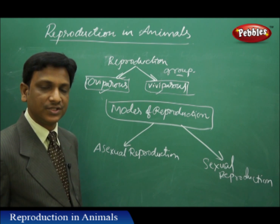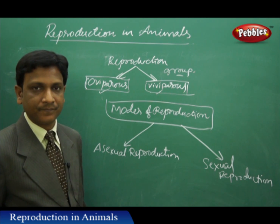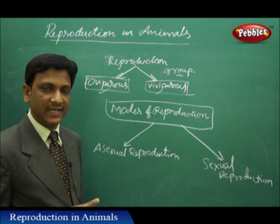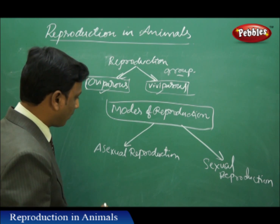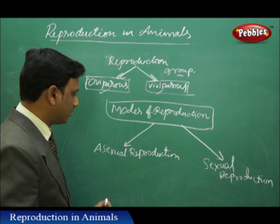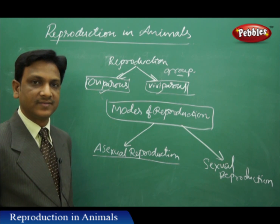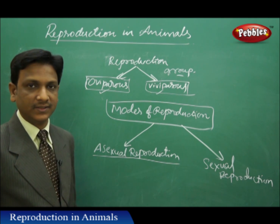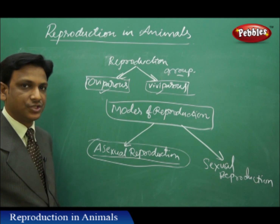We observed the same kinds of asexual and sexual reproduction in plants also. In seventh class when we studied reproduction in plants, we studied asexual reproduction and sexual reproduction. Sexual reproduction means fusion of male and female gametes takes place — one male cell and one female cell combine to produce a zygote. Whereas in asexual reproduction, organisms are produced without the fusion of male and female gametes. Now first let us observe asexual reproduction in animals — in plants we studied examples like bryophyllum, where the leaf has small plantlets which can be planted. Similarly, in animals also we see different kinds of organisms participating in asexual reproduction.